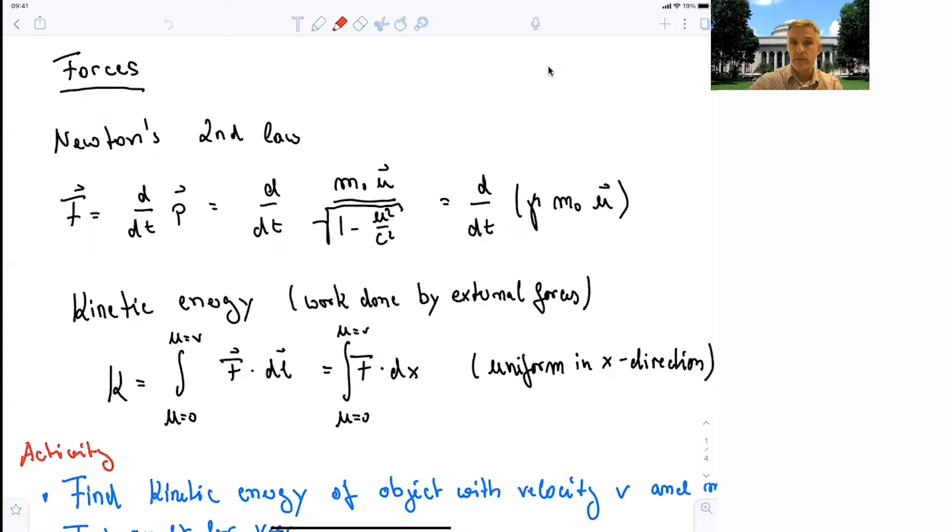So we start from Newton's second law. We know that a force is a change in momentum. We can write this down as d/dt m0 times u over square root 1 minus u squared over c squared, or just with a gamma factor.